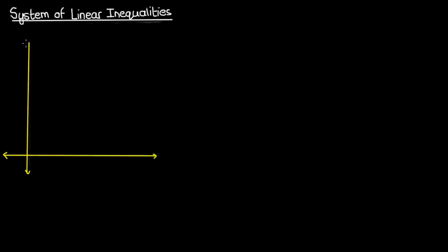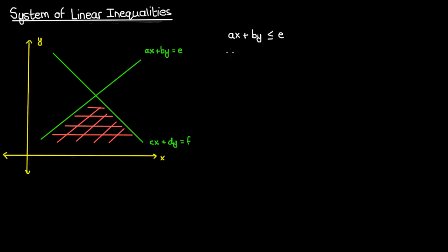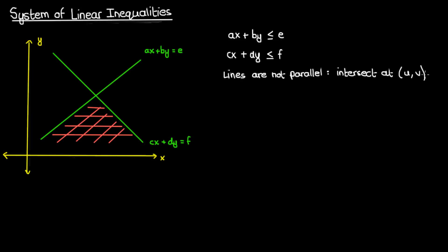Suppose I have two lines: one given by ax plus by equals e, and another given by cx plus dy equals f. Suppose that I wanted to find the set of points that were below both of these lines — in other words, the set of points which obey these two linear inequalities. Suppose also that these two lines are not parallel; in other words, they intersect each other at some point u comma v.